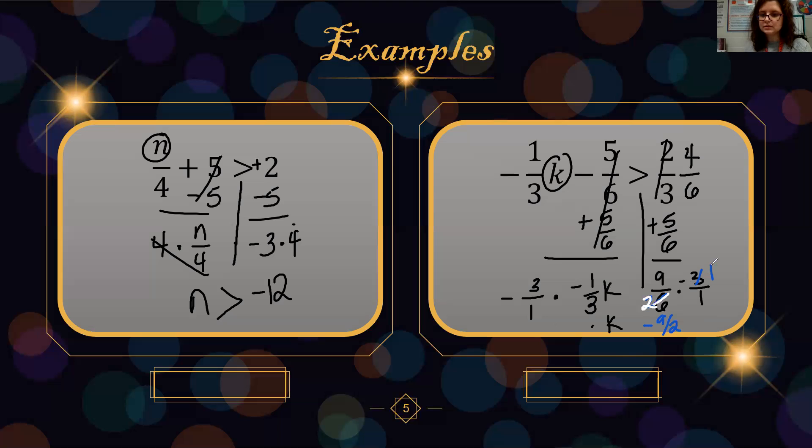That stands out a bit better. Let me write over this in the white. We did multiply by a negative, so our sign will flip over. So K is less than negative 9 halves, or we can say negative 9 halves is the same as negative 4 and 1 half.